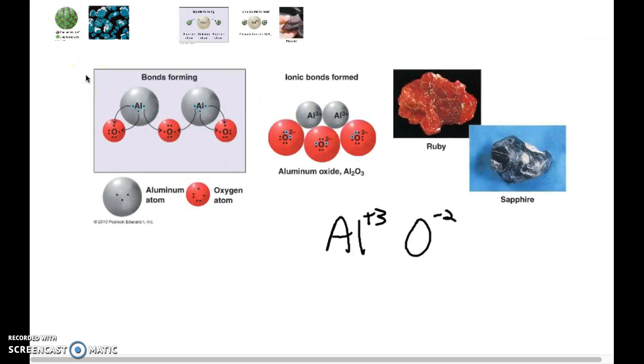All right, and then another example would be aluminum, which has a plus three charge, because it has three valence electrons. Oxygen has two, and in order for that to come out evenly, it ends up taking two aluminums and three oxygens, so then we have the same number.